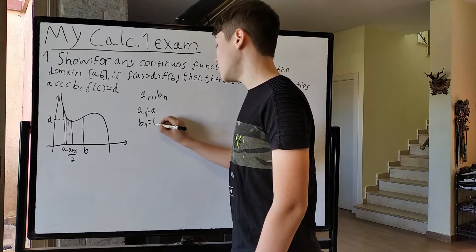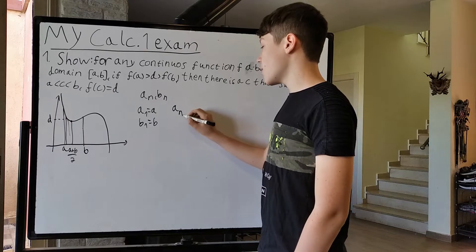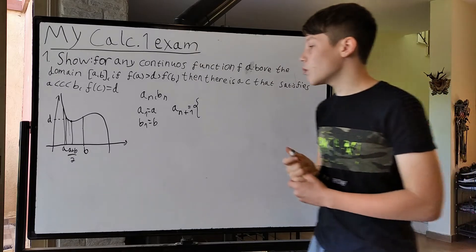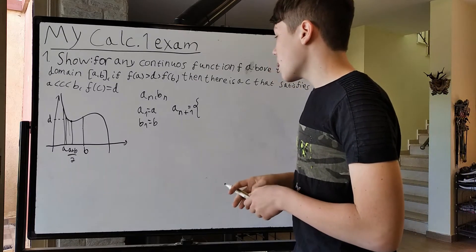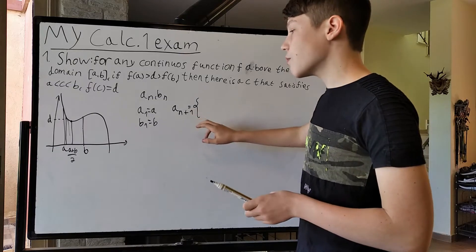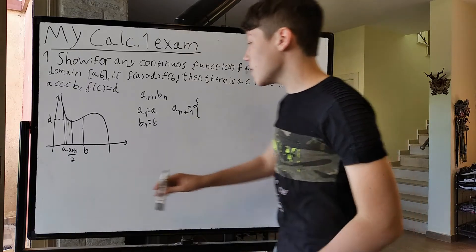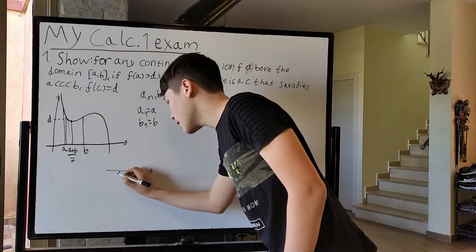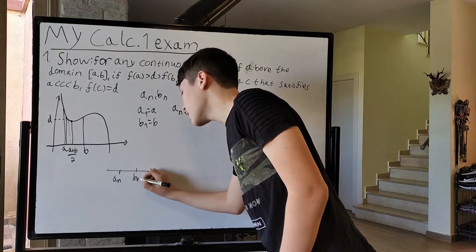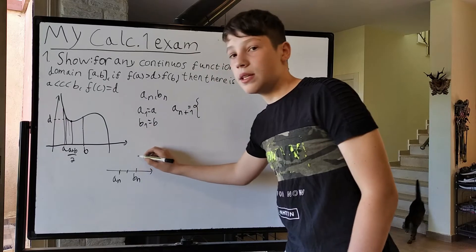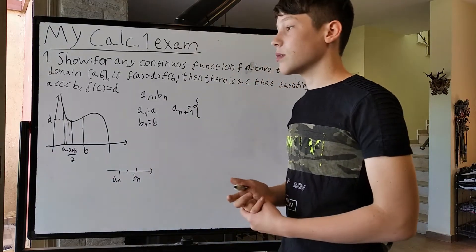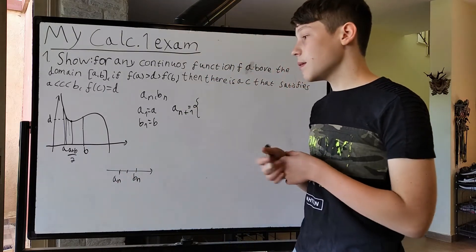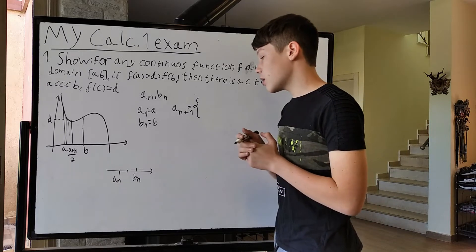We're going to define the series a_n and b_n as follows. We'll define a_1 as a, b_1 as b, and we'll define a_{n+1} based on how we transition from one domain to the next. We have our domain a_n and b_n, we'll look at the average, and depending on where d is relative to f(a_n), f((a_n + b_n)/2), and f(b_n), that's where we'll close in.